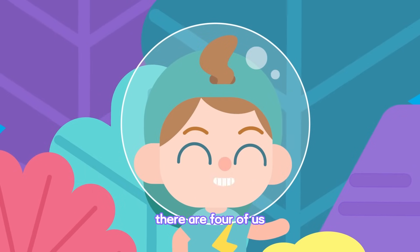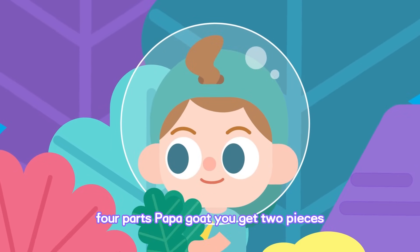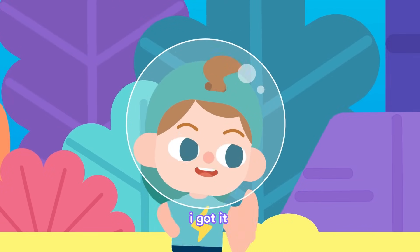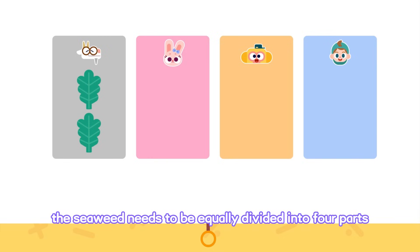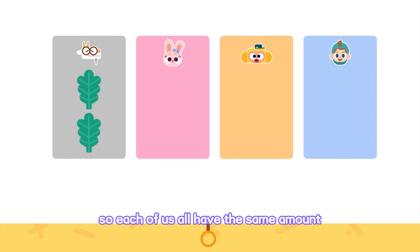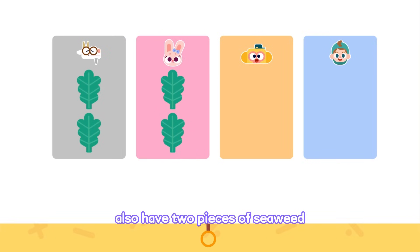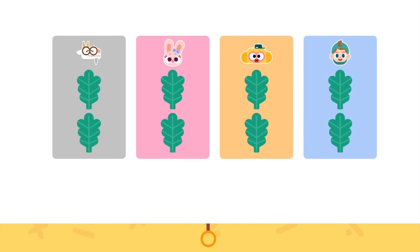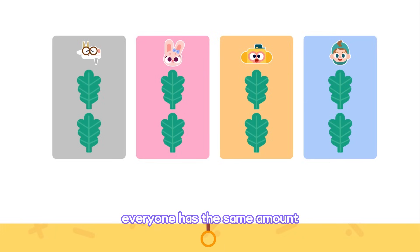There are four of us. Let me equally divide the seaweed into four parts. Papa Goat, you get two pieces. And how many pieces will we get? Watch this. The seaweed needs to be equally divided into four parts so each of us all have the same amount. Papa Goat has two pieces of seaweed. So Bella should also have two pieces of seaweed. Then Momo and I should also have two pieces of seaweed. If we equally divide the seaweed into four parts, everyone has the same amount.